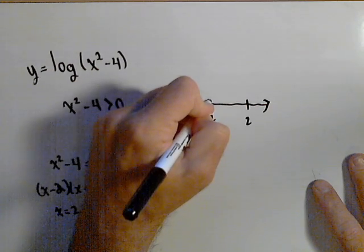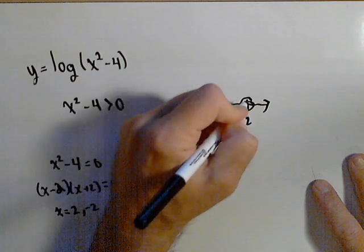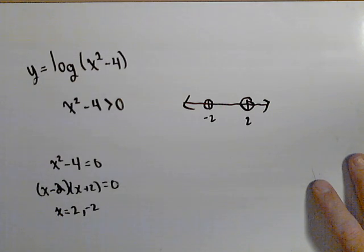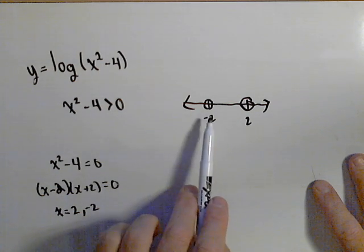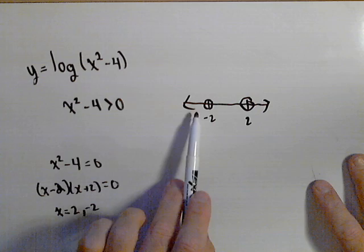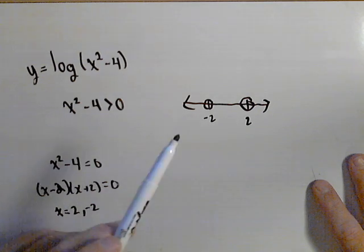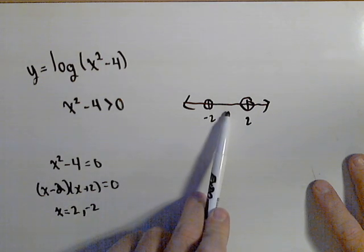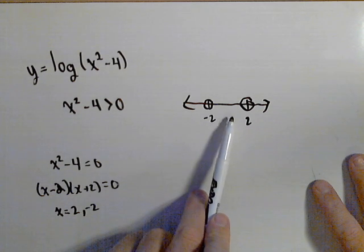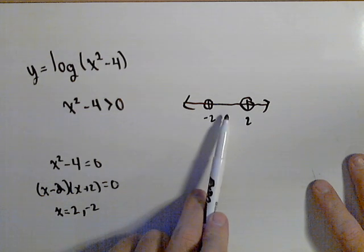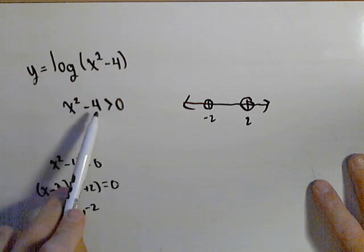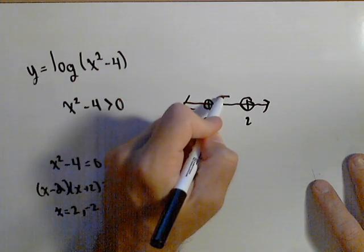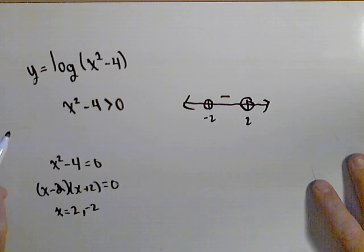And now remember, we do not want to include zero in this case because log of zero is undefined. Now the reason I did this is because I'm going to pick where my function is positive and where it's negative. All I need are test points. So for instance, if I were to use zero, any place in between here, it's always going to have the same sign because we picked the points where it would switch signs. If I put zero in here, zero minus four is negative. So I know it's negative in between negative two and two.